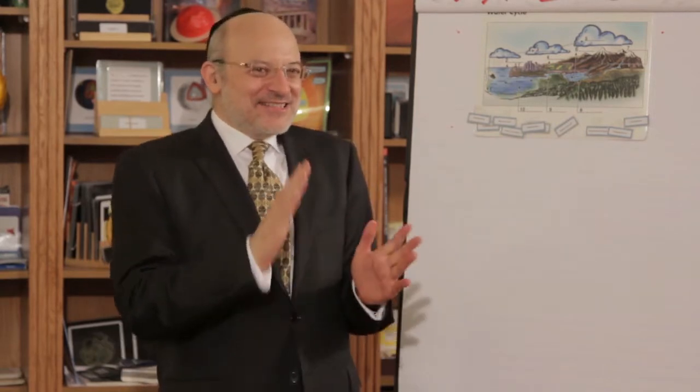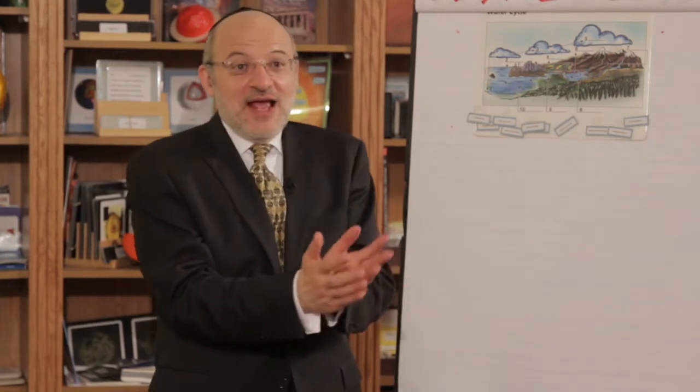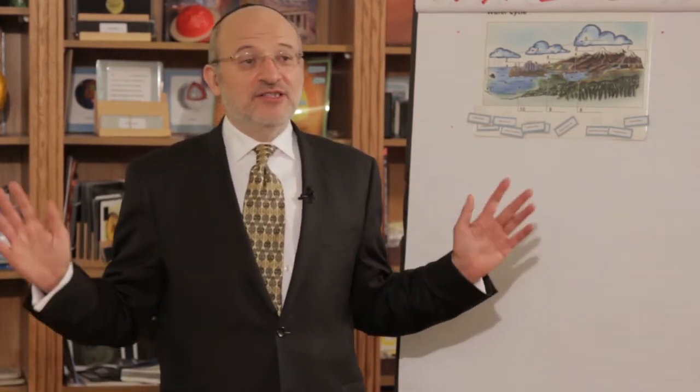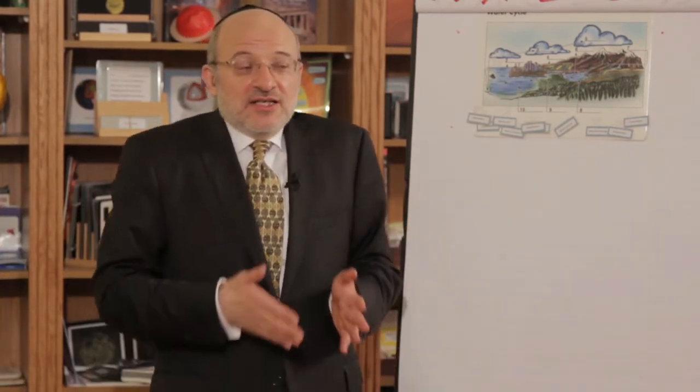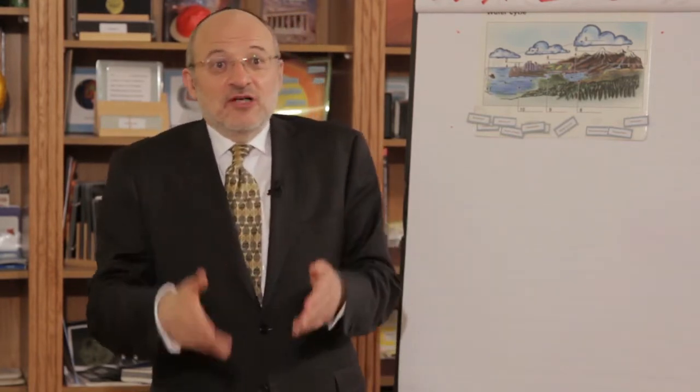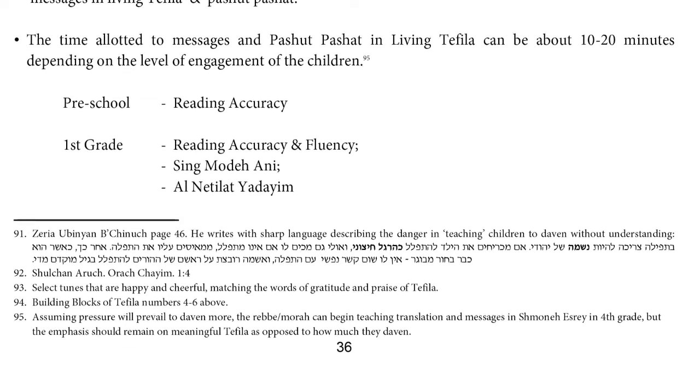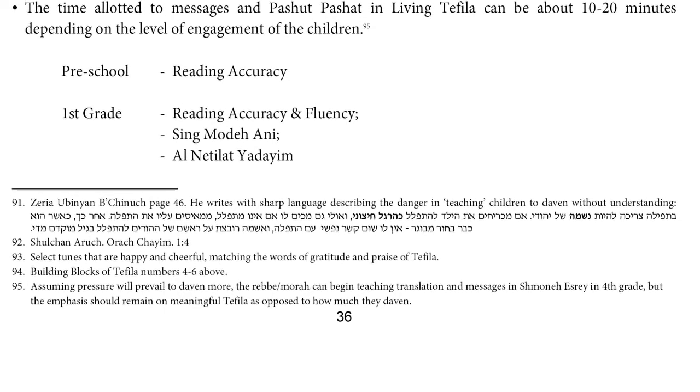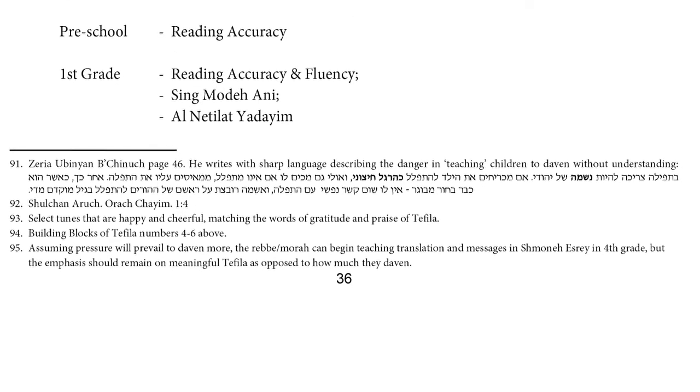Rav Volba says: cut back. Get children to be able to daven Shmoneh Esrei by bat and bar mitzvah - you don't have to be there at age eight or nine. The pressure is artificial, not real. The Torah is not requiring it. There's no chinuch that says teach a child to daven words without understanding, because that's not chinuch - chinuch means training in the mitzvah, and the mitzvah is kavana sa'lev. We're reinforcing the problem of tefillah b'loi kavanah, b'loi lev - without the mind, without the heart, without emotion, without understanding.